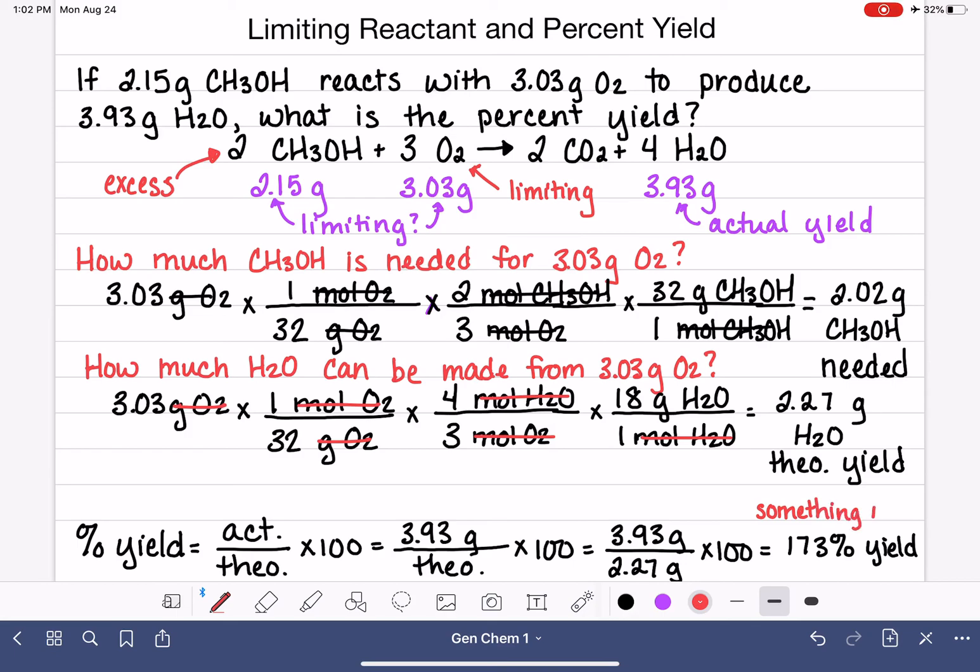Not something wrong with our calculation. Our calculation is totally fine. But a very high, over 100% yield just reflects poorly on the person that was doing the work in the lab. Couldn't erase this because I don't want you to think that we've done any sort of incorrect calculation.